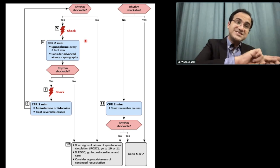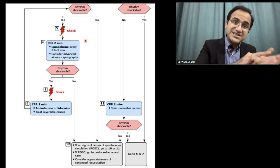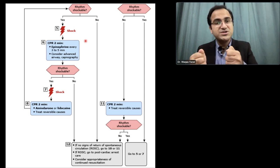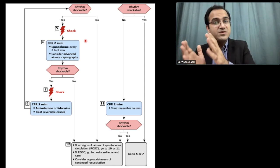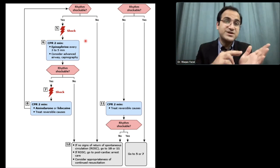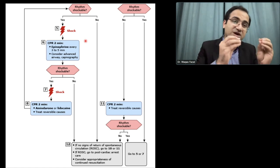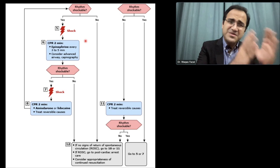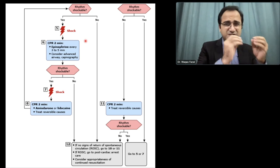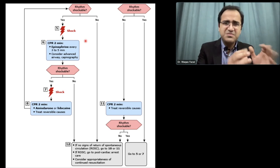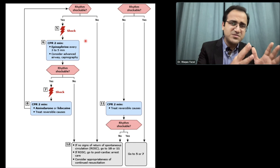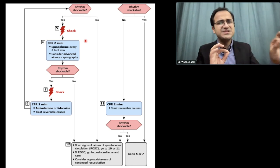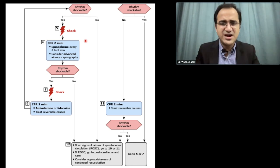If at any point the rhythm becomes non-shockable, you shift to the other side of the protocol. If the patient has asystole or pulseless electrical activity, you cannot shock the patient — you can only give epinephrine and continue CPR. If asystole or pulseless electrical activity converts to V-fib, you shock the patient. If V-fib converts to asystole, you do CPR and give epinephrine. Remember, asystole has a very poor prognosis and the majority of patients die.